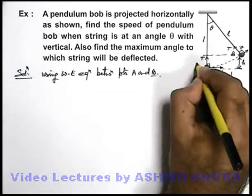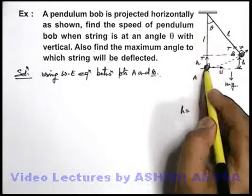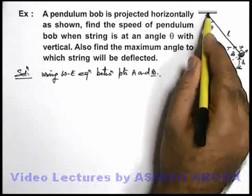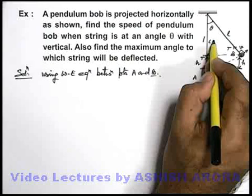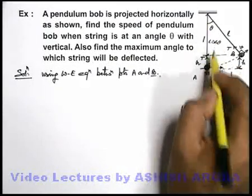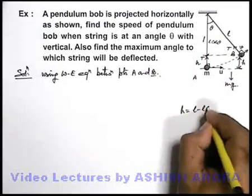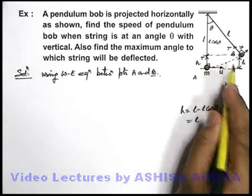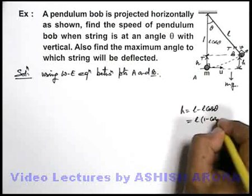This h can be very easily calculated, as this whole distance is l. From this triangle if this is l, it can be written as l cos theta. So this h can be written as total l minus this length, that is l cos theta, it is l minus l cos theta. So the displacement of bob along mg opposite to the force is l into one minus cos theta.